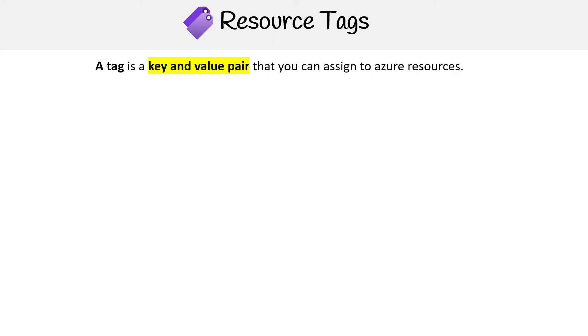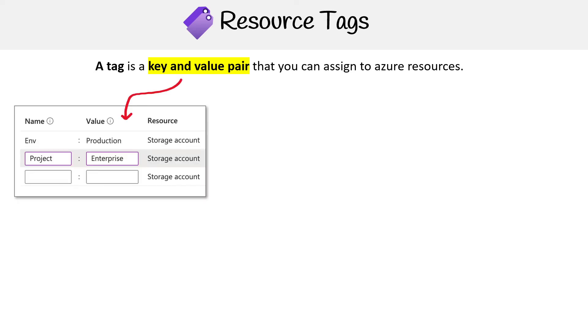Let's take a look at the concept of resource tags, sometimes just known as a tag. This is a key and value pair that you can assign to Azure resources. Generally, when you are launching a new resource, you're going to have a tags page where you can apply that key and value name.